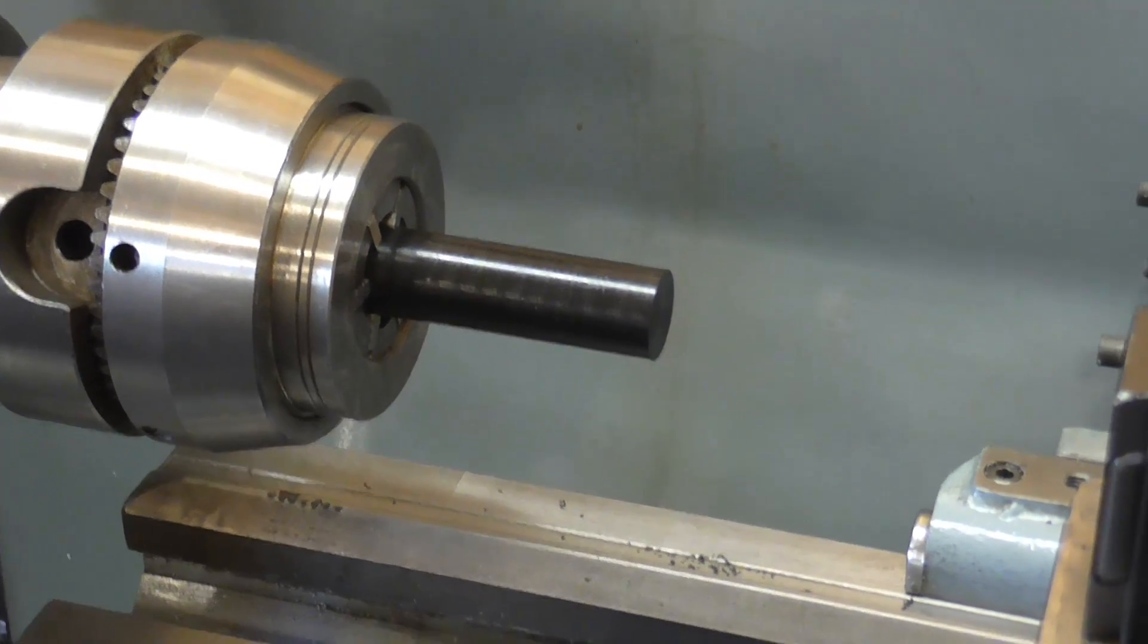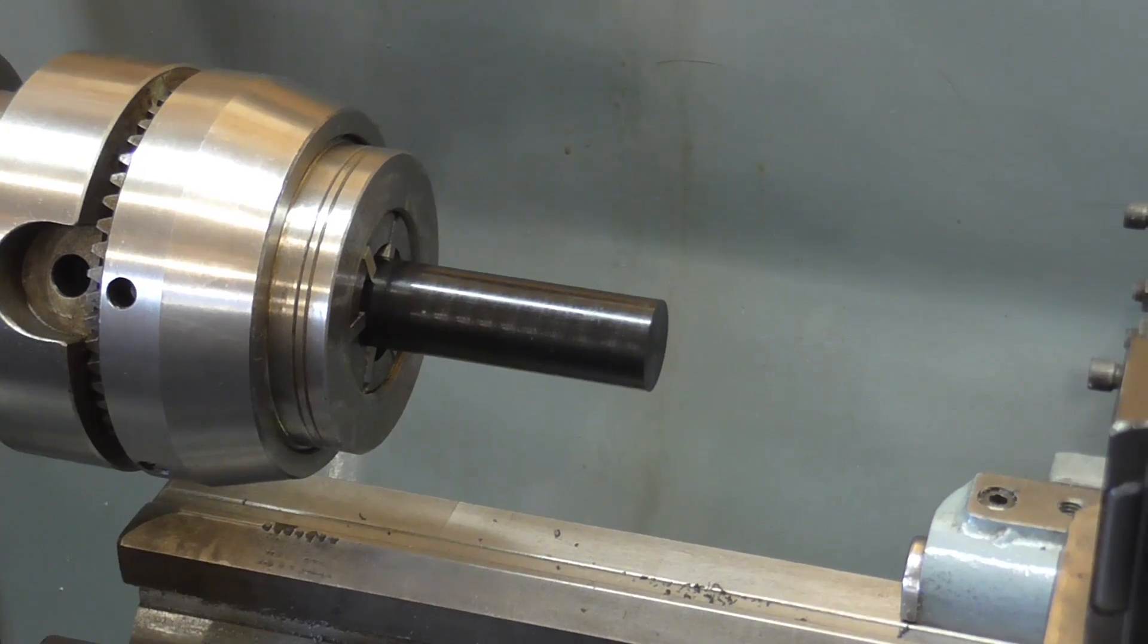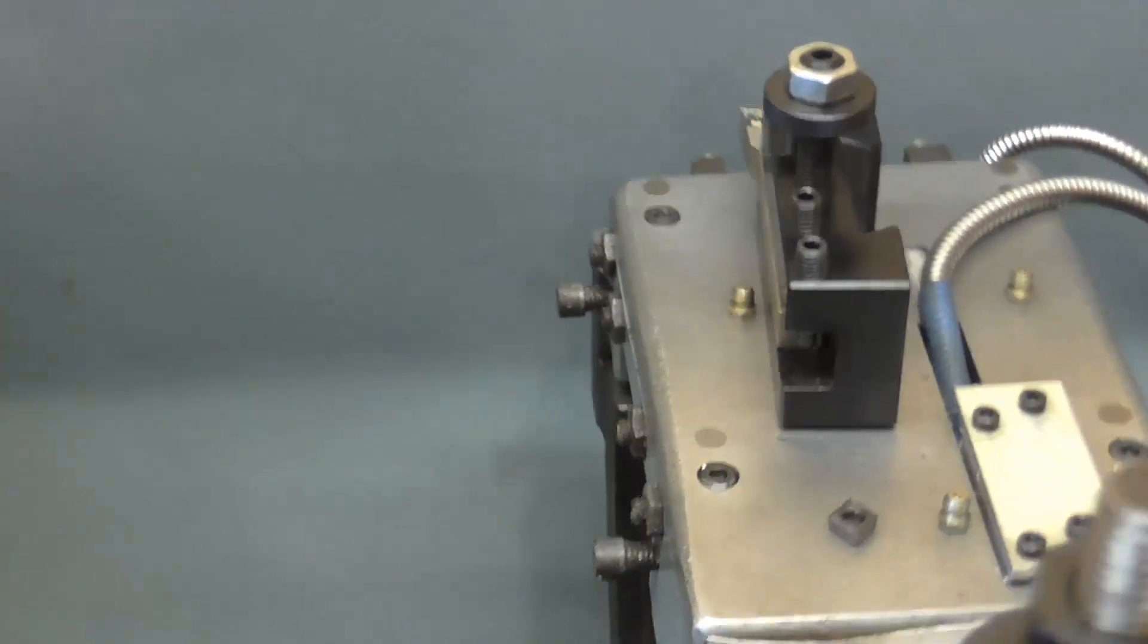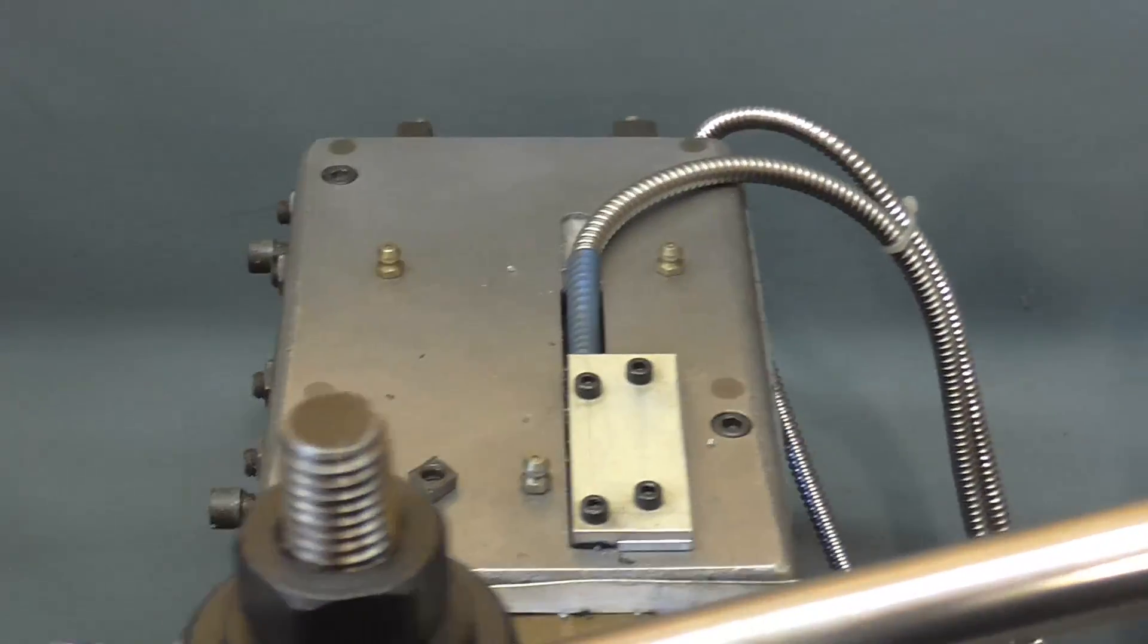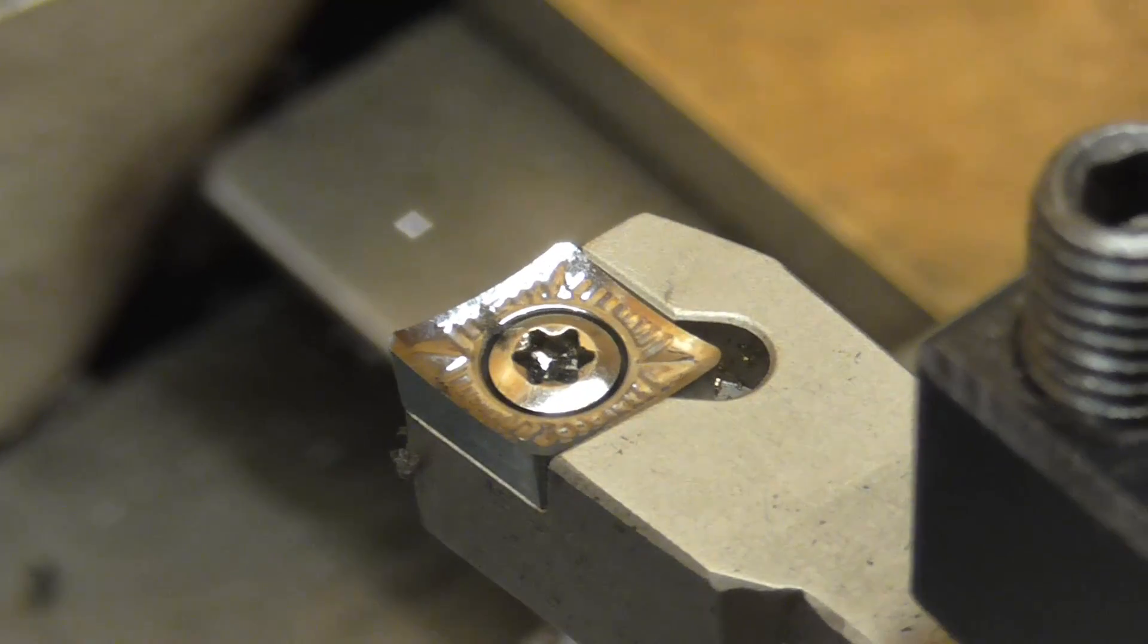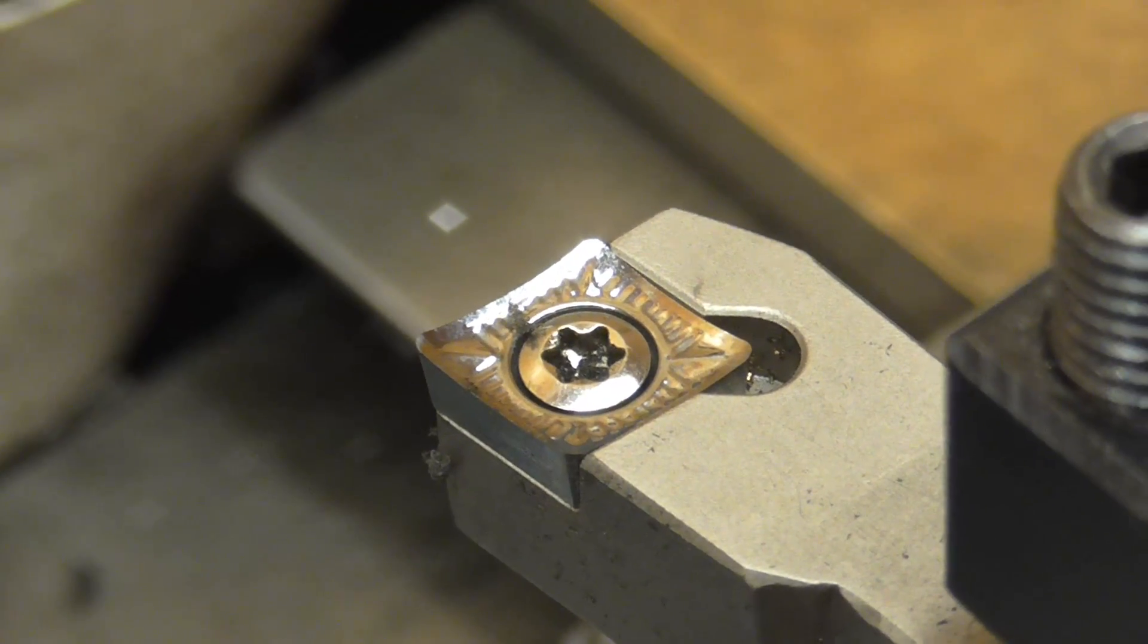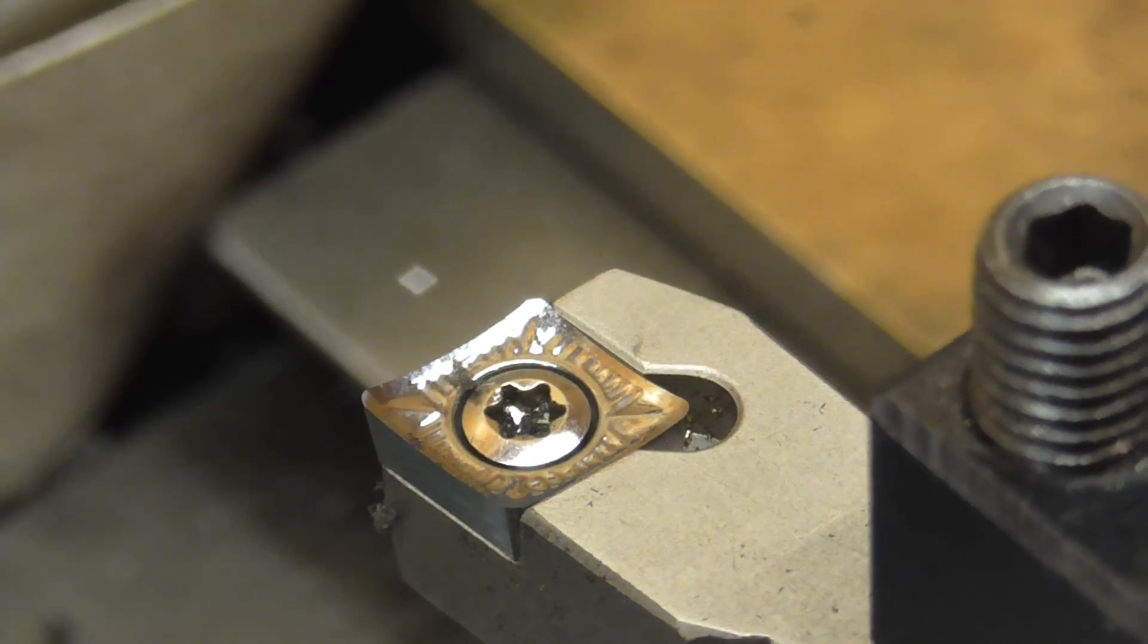I've never machined glass filled nylon before - it is of course quite abrasive. I have done a quick test cut. What I've got here, in the correct direction, is a ground and polished insert, normally used for aluminium, but it seems to give a good finish.